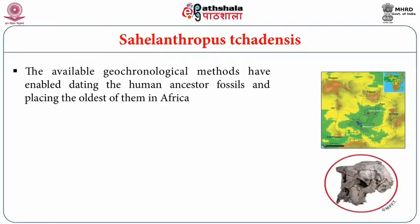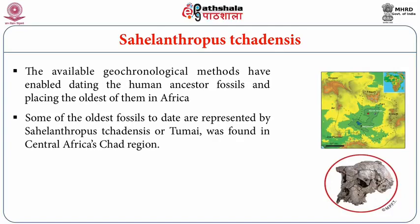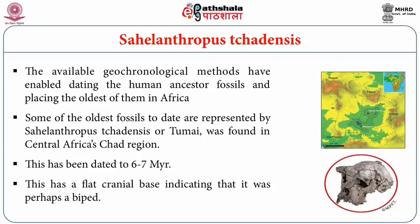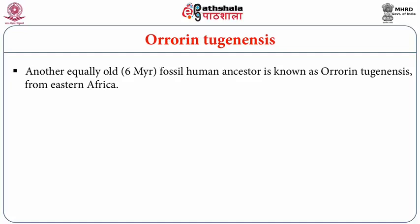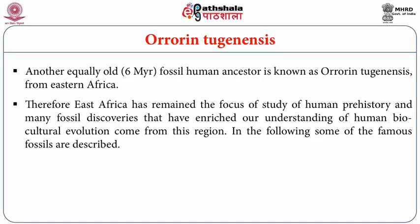Available geochronological methods have enabled dating of human ancestor fossils, placing the oldest in Africa. Some of the oldest fossils are represented by Sahelanthropus tchadensis, or Toumaï, found in central Africa's Chad region, dated to about six to seven million years ago, with a flat cranial base indicating it was perhaps a biped. Another equally old fossil, about six million years old, is Orrorin tugenensis from eastern Africa, making east Africa the focus of human prehistory studies.